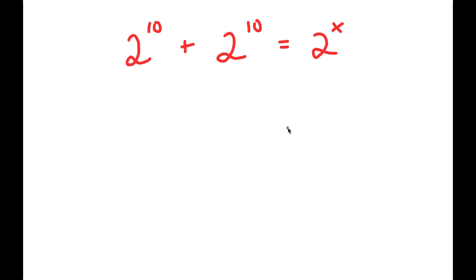So in this problem, I have 2 to the power of 10 plus 2 to the power of 10 is equal to 2 to the power of x. I want to find the value of x here.